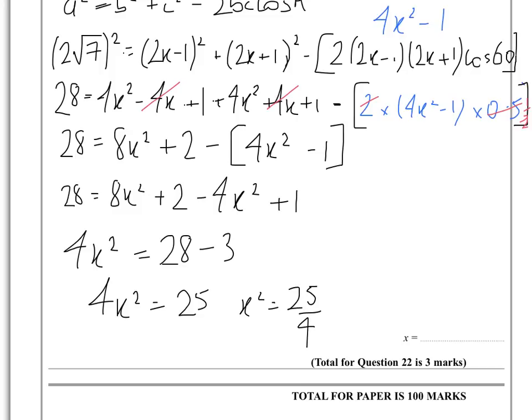So that means that x would be equal to, you'd have to square root the square root of 25 over 4, and that gives us square root of 25 is 5, square root of 4 is 2, 5 over 2, so x is 2 and a half.